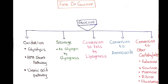Glucose is utilized by our body in different ways. The main way of utilization of glucose is its oxidation. Glucose is oxidized by glycolysis, which provides energy. Glucose is also oxidized by other pathways like the HMP pathway and the uronic acid pathway.